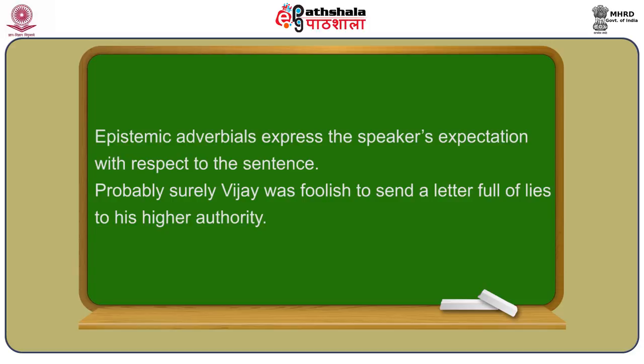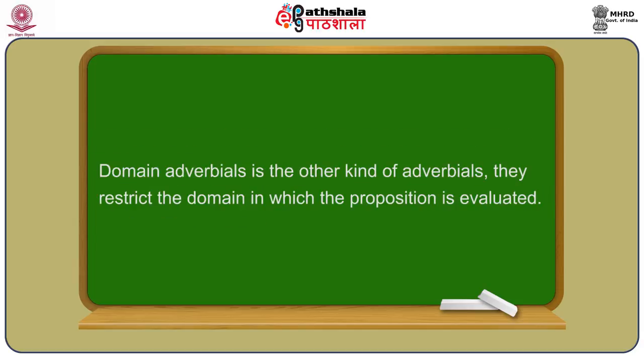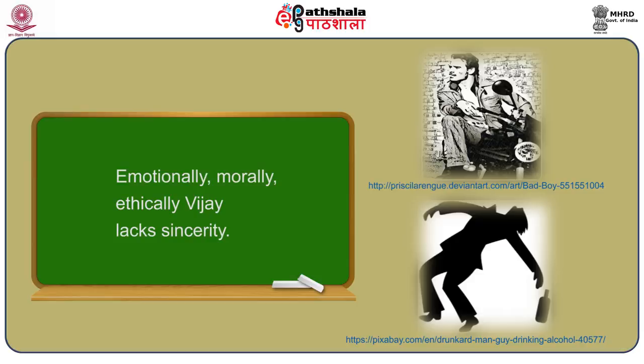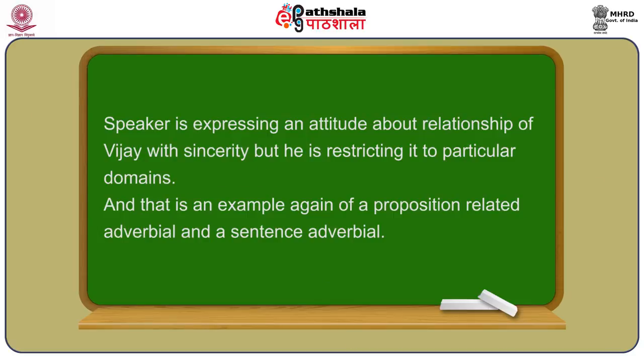Epistemic adverbials express the speaker's expectation with respect to the sentence — you can think of them as epistemic modals expressed syntactically by adverbial expressions. For example: probably, surely Vijay was foolish to send a letter full of lies to his higher-up. Domain adverbials restrict the domain in which the proposition is evaluated. Suppose I say: emotionally, morally, ethically, Vijay lacks sincerity. You're restricting the relationship of Vijay with sincerity to particular domains. That is an example of a sentence adverbial.